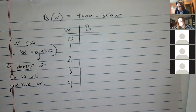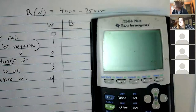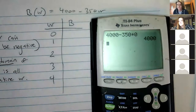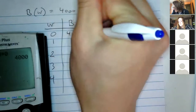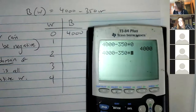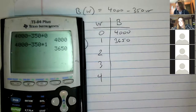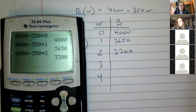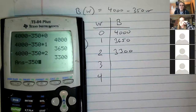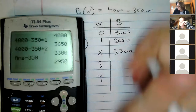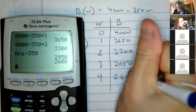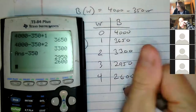So plugging into the calculator: at W=0 you get 4,000 (obvious, since 350 times zero is zero). At W=1, 4,000 minus 350 times 1 is 3,650. At W=2, 3,300. With a graphing calculator you can do minus 350 using the previous answer and keep going: 2,950, 2,600, and so on. The balance is going down, but it's slow, so the table needs to be bigger.